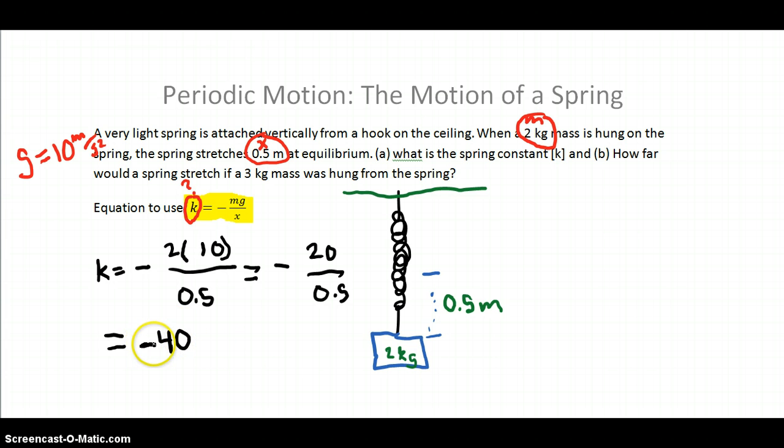So, our spring constant, k is equal to negative 40. That finishes up part A.